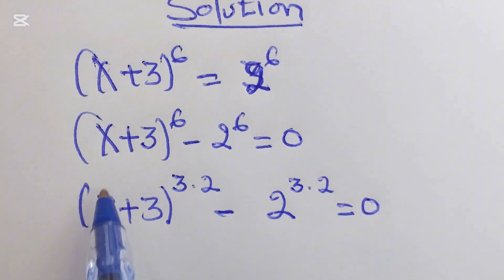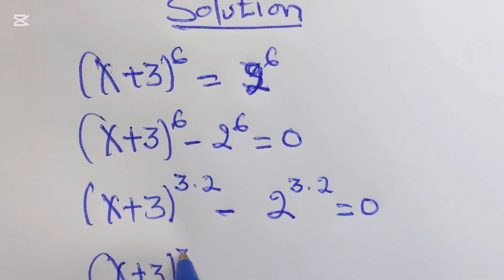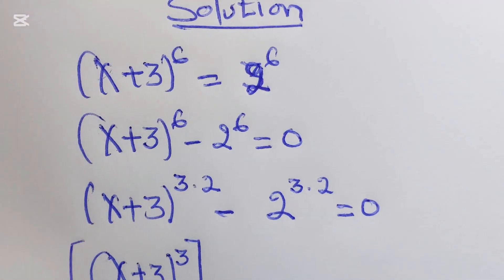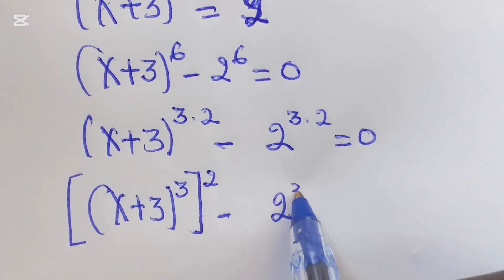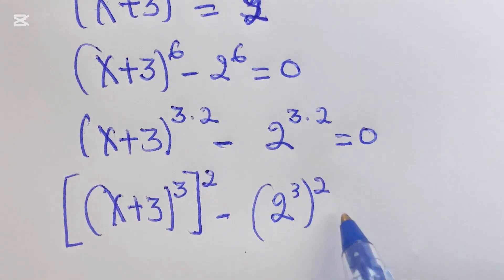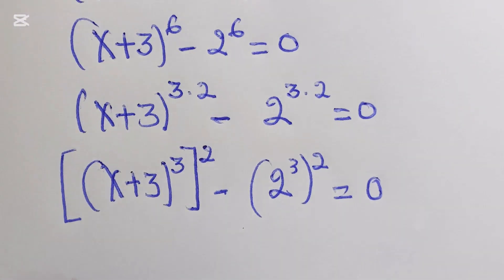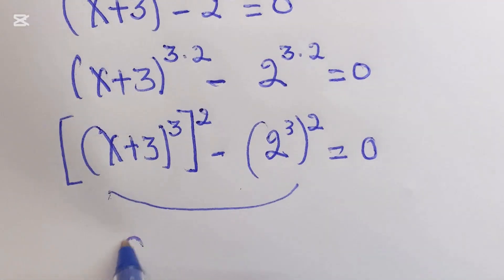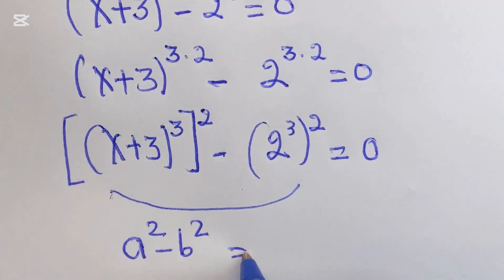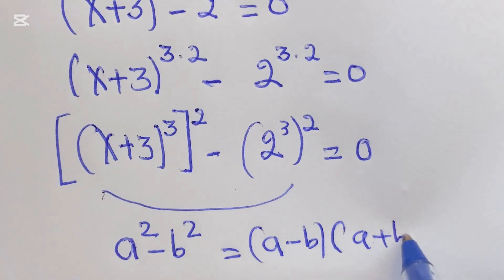Now, this gives us x plus 3 cubed, then squared, minus 2 to the power of 3 squared, which equals 0. This brings the formula: a squared minus b squared equals a minus b, times a plus b.